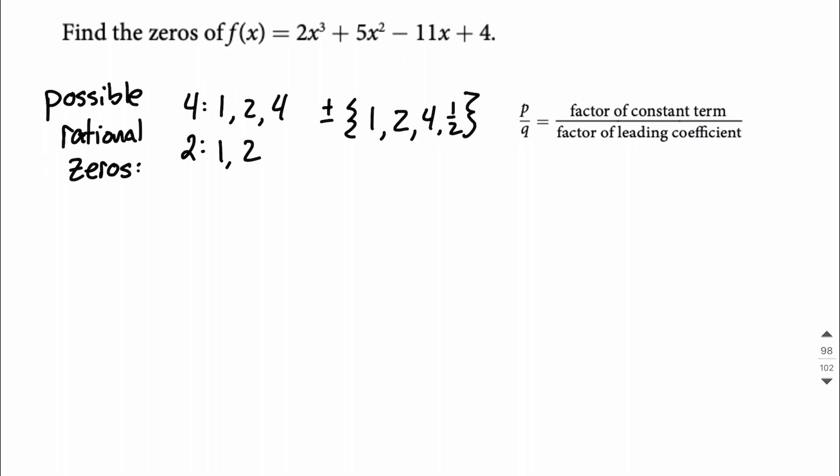Another thing you want to be careful of on this is you can't reverse the order. So we can't say 1 over 4, because that's the wrong order for numerator and denominator, so that's not a possibility. So we have 8 possibilities, right? Positives of all these values, and negatives of all these values as well.